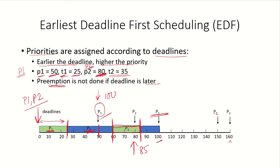At time 80, while P1 was running, P2 arrives in the system. At this point, the deadline of P1 is 100 but the deadline of P2 is 160. So P1 will continue running, and only after that will P2 be given the CPU. P2 will then use it for 35 time units. Even though P1 arrives again during this period, P2 will keep running until it completes its 35 time units. This completes the earliest deadline first scheduling algorithm example.